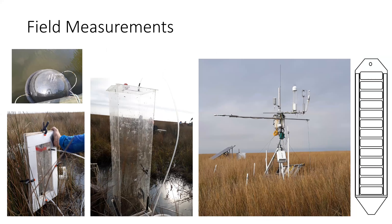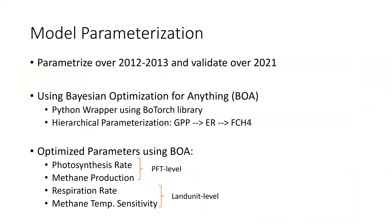In terms of field measurements we had chamber measurements, piezometers, and an eddy covariance tower for carbon and methane flux. The tower was set up in 2012–2013 and again in 2021. We parameterized using eddy covariance data from 2012–2013 as our training dataset, then validated with the 2021 dataset. We used BOA — a Bayesian optimization wrapper recently developed as a Python wrapper for ELM — that can parameterize any model parameter using any time series via Bayesian optimization. We used GPP, ecosystem respiration, and methane flux from eddy covariance.